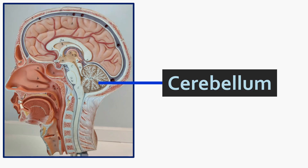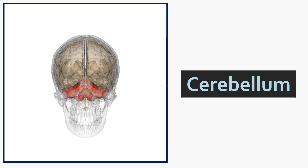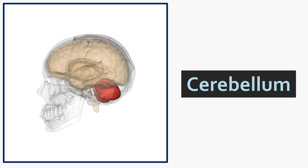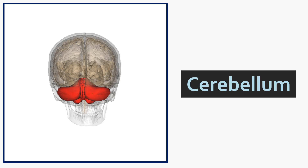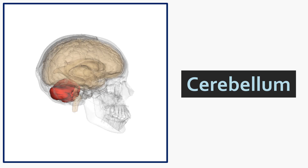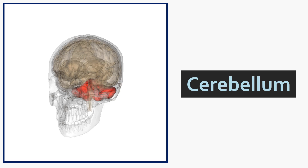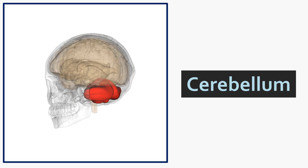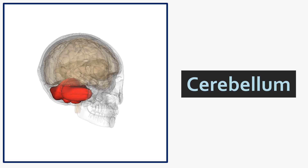Moving up a little bit, we'll talk about the cerebellum. The word cerebellum means little brain, and it is more or less a little brain hanging off the back of the main big brain. Even though it's a fraction of the size of the big brain, it contains more neurons than any other brain region put together.